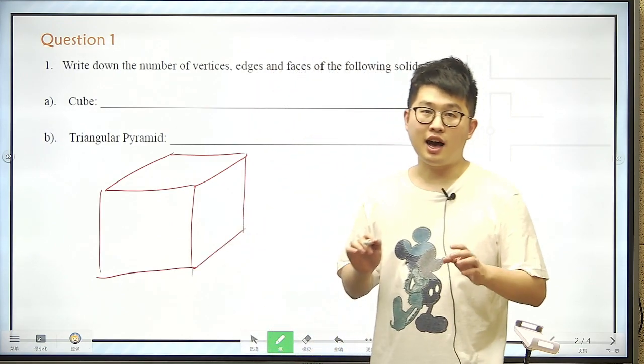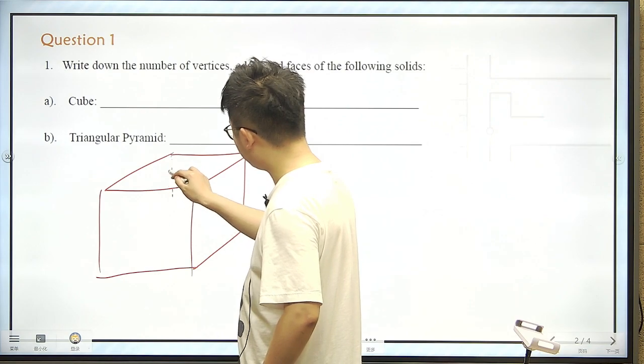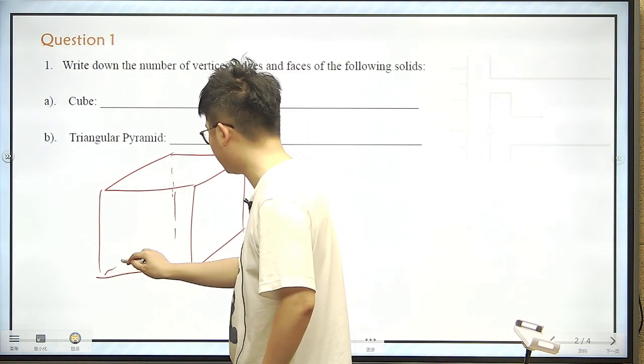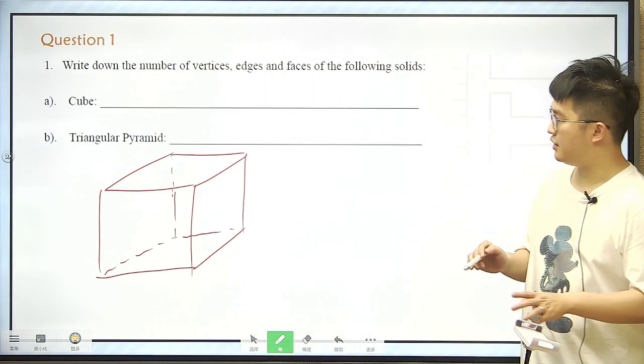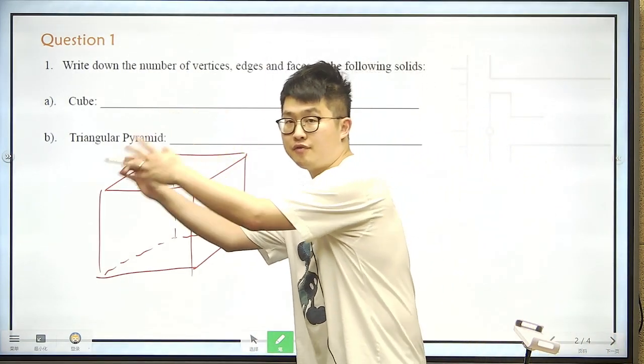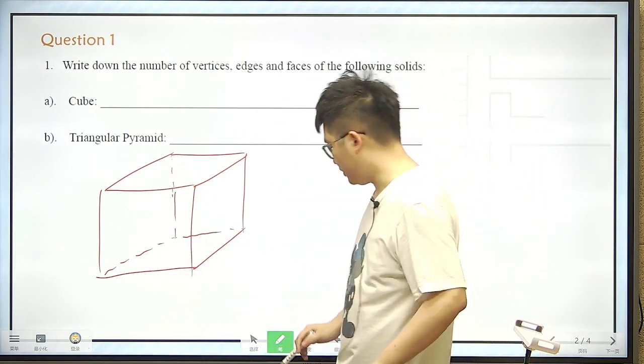And for the lines we can't see, we draw dotted lines to represent that there is a line here, here, and here. We can't see them, but they exist just on the different side of it.